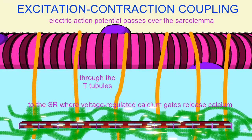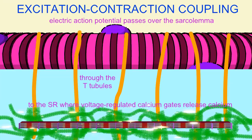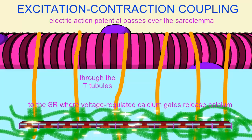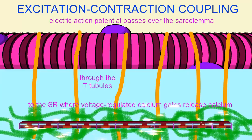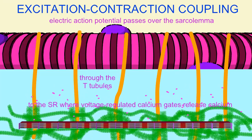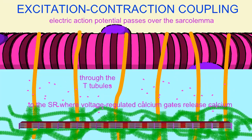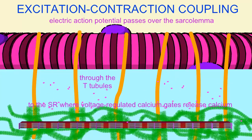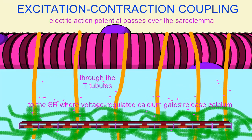Inside the muscle cell, the action potential causes the voltage-regulated calcium channels in the sarcoplasmic reticulum to open, releasing calcium. The sarcoplasmic reticulum surrounds the sarcomere, so the calcium which leaves the SR can bind to the muscle protein troponin.